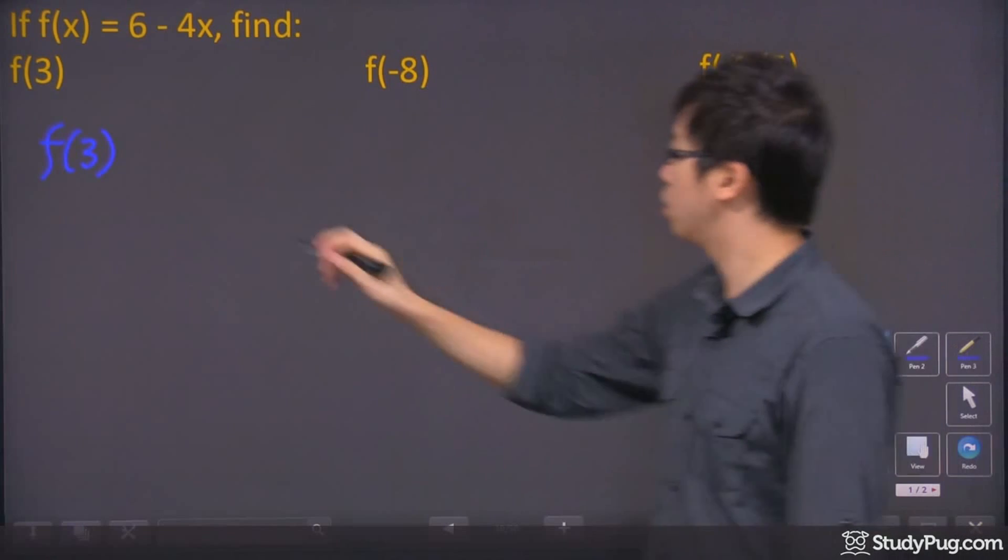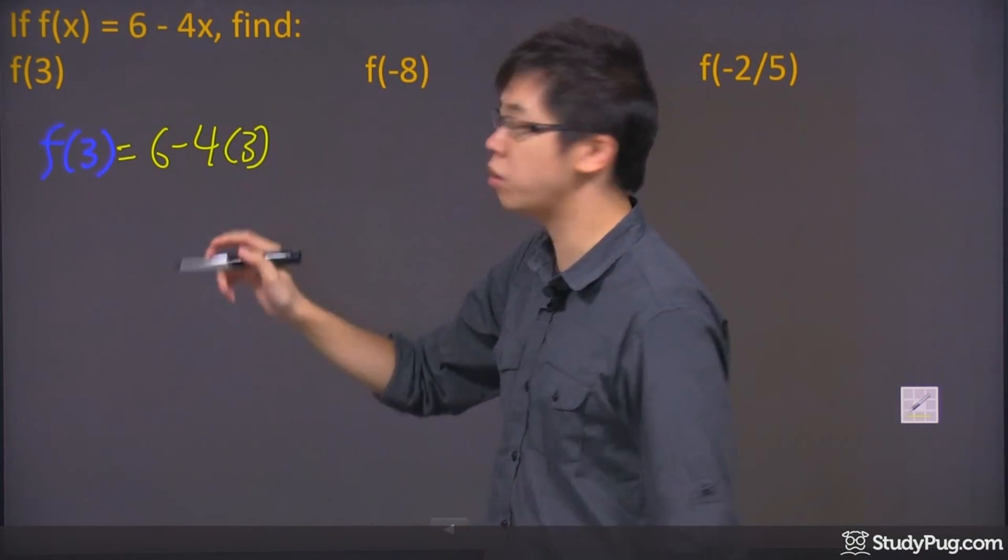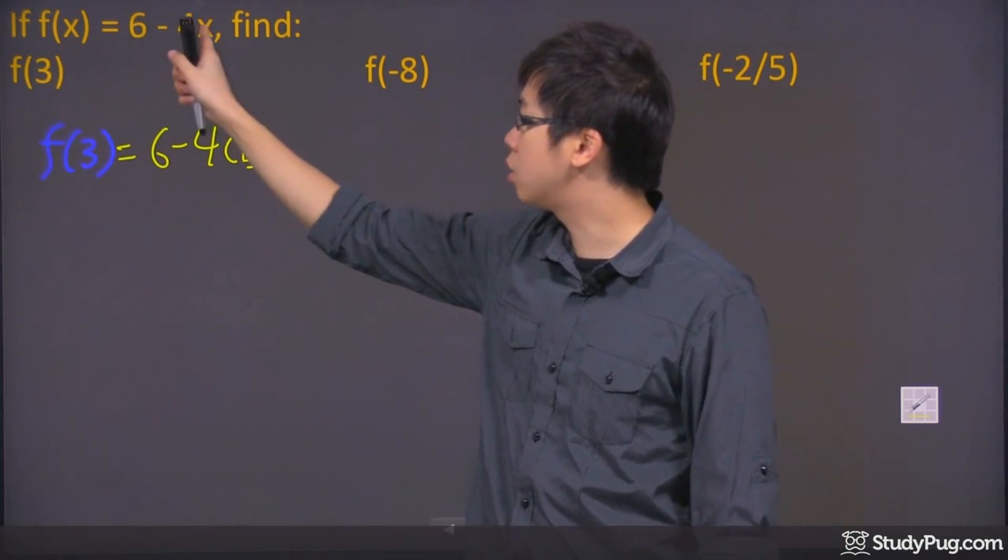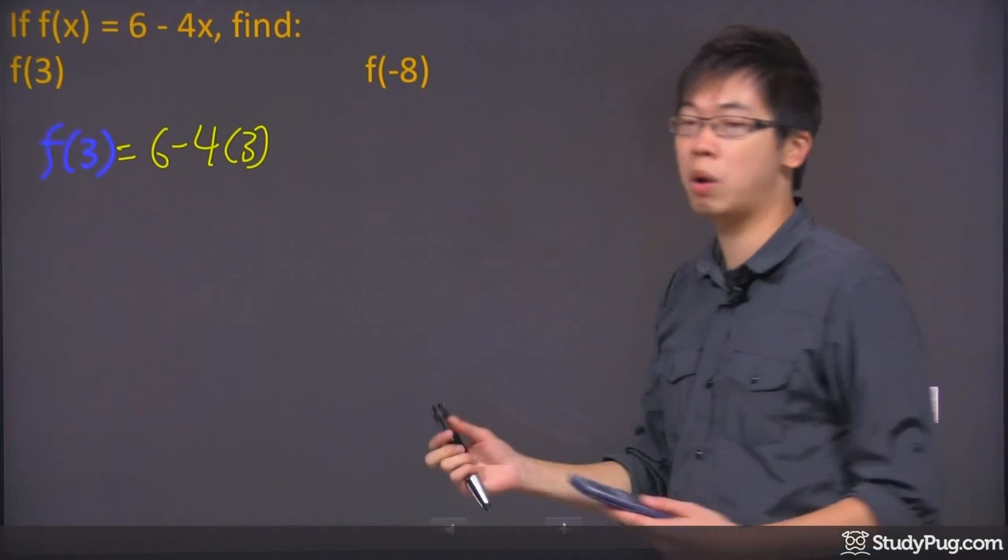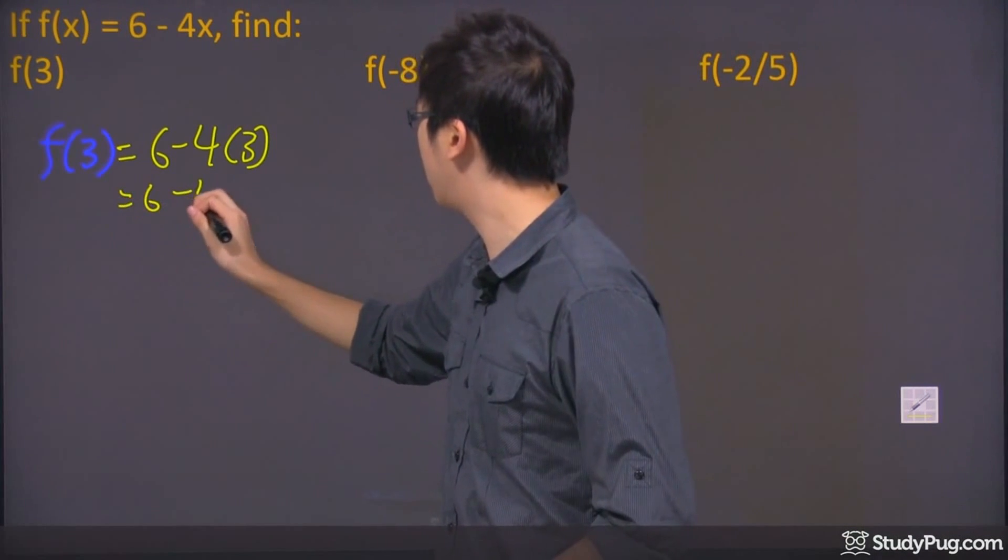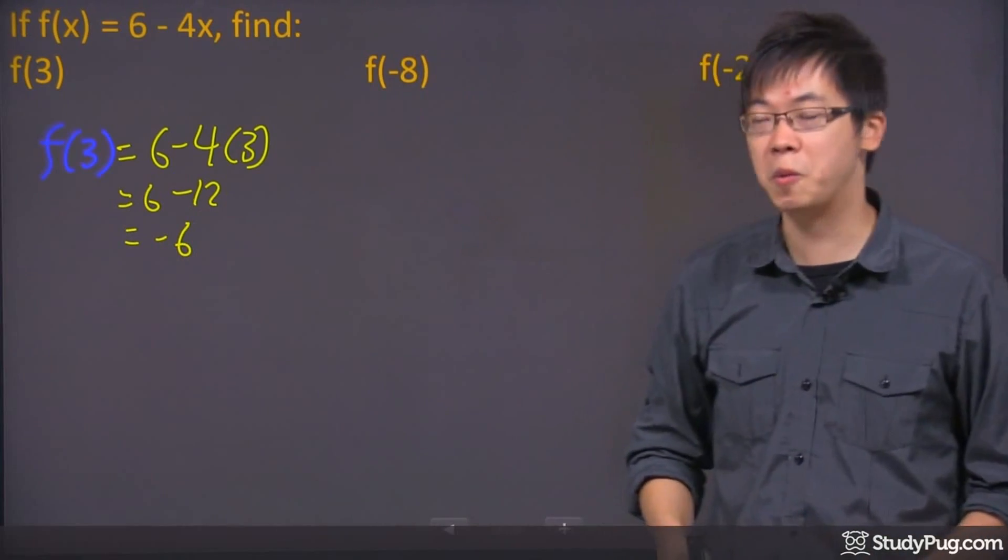And it's going to turn into 6 minus 4 times 3. All you have to do is just place the 3 into the position of the x. And then you just do the rest of the math right here for yourself. So we got 6 minus 12, and we got ourselves a negative 6. And that's the first answer.